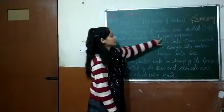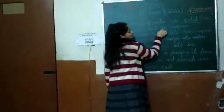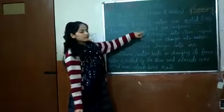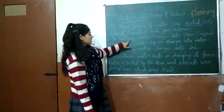See, first point: the 3 forms of water are solid, liquid and gas. The 3 forms of water—solid, liquid and gas—which are ice, water and vapor.